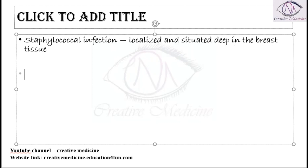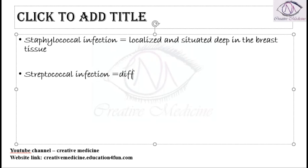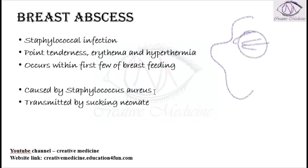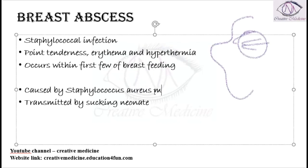There is one more organism, which is Streptococcus. Streptococcus can also cause breast infection, but that is mastitis. This streptococcal infection is mainly diffuse and it is a superficial infection. Most commonly, if you see a breast abscess, it is caused by Staphylococcus aureus.